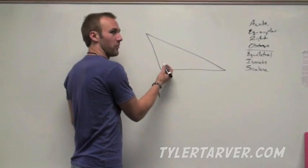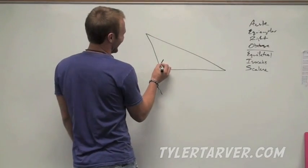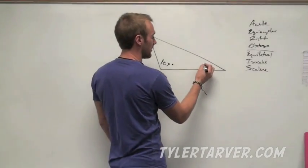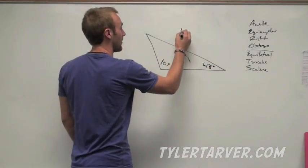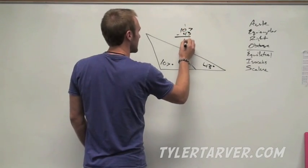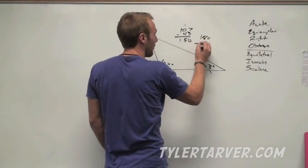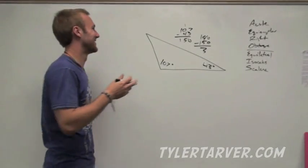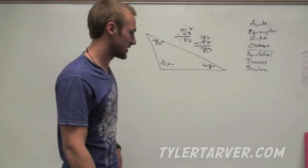For example, let's say that angle was 107 degrees and this one was 43 degrees, and we want to find the last angle. We'd have to add those two up — that's 150. And then we just subtract 150 from 180, which gives us 30 degrees. So that last angle has to be 30 degrees.